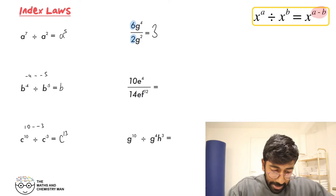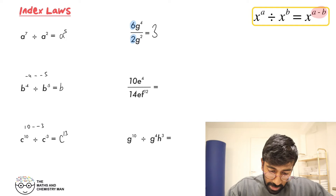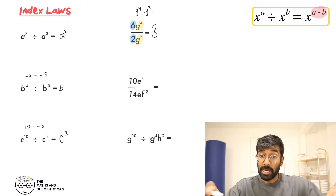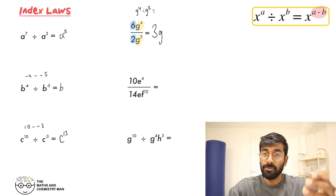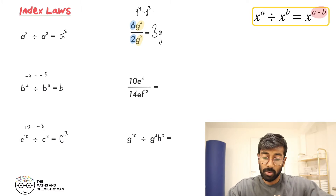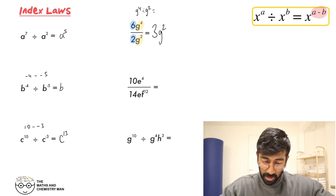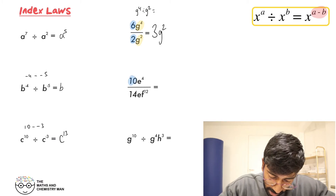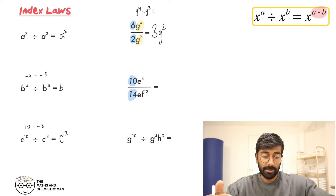So you've got that, and now let's deal with the powers: G to the power of 4 divided by G to the power of 2. What do we do? Just take them away: G to the power of 4 take away 2, which is G to the power of 2.